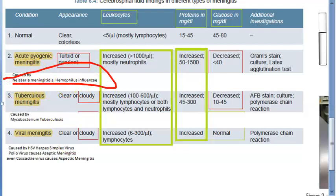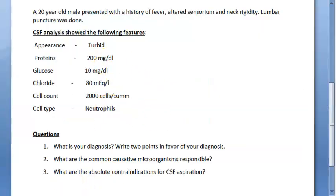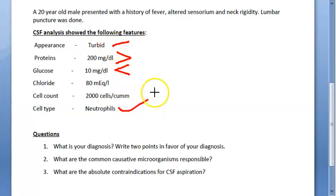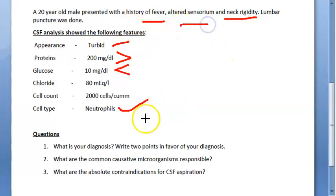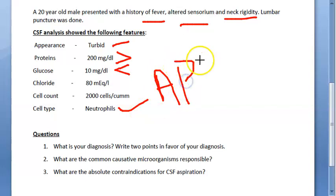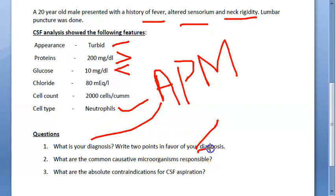So we have the answer to this question. The diagnosis: protein has increased, glucose has decreased, neutrophils are more, and it is turbid. Considering there is neck rigidity, fever, and altered sensorium, it looks like acute pyogenic meningitis. Two points in favor of the diagnosis: proteins are increased, neutrophils are more, glucose is less, and CSF is turbid.